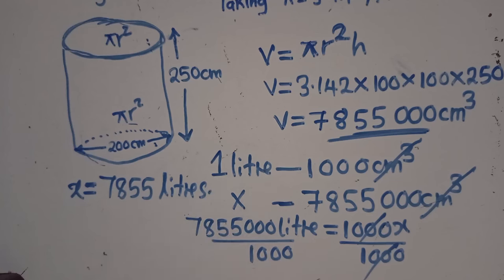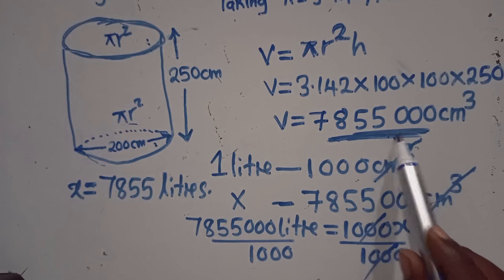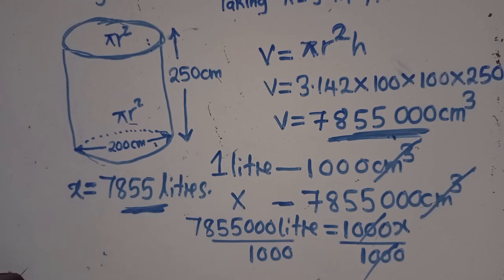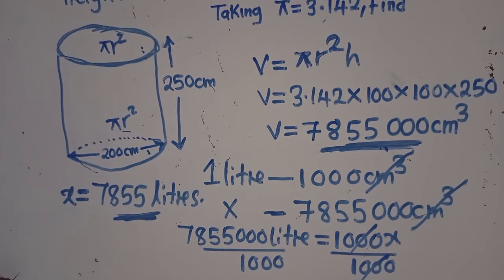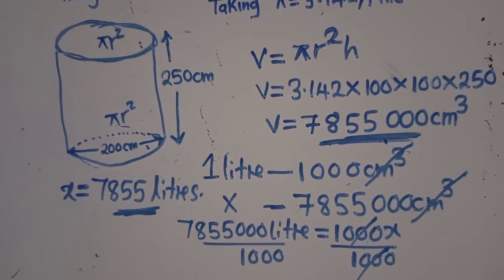The number of liters this tank can hold is 7,855 liters. This is the volume of the tank — this is the number of liters it can hold. This is how you need to calculate. I want you people to be fully equipped and know how we get to calculate these things. Let us move on to the next question.